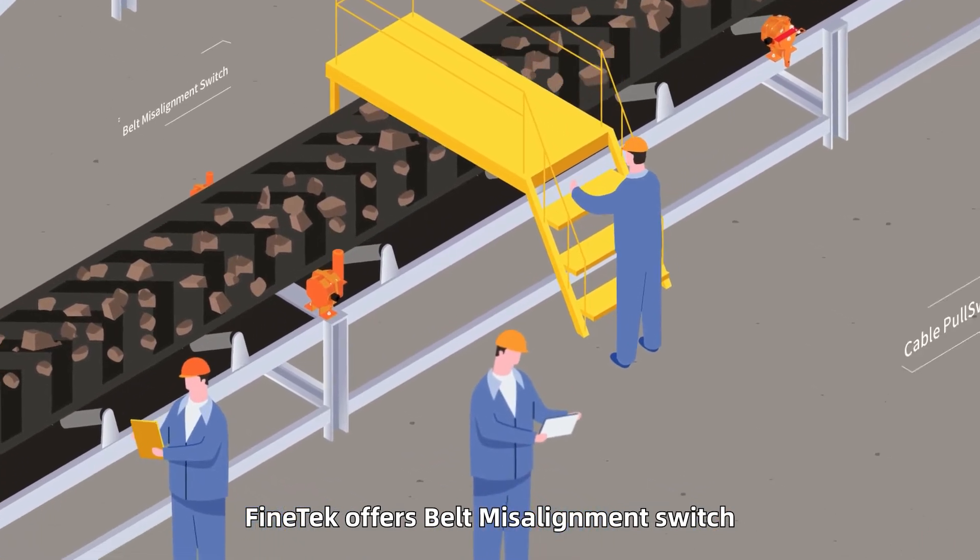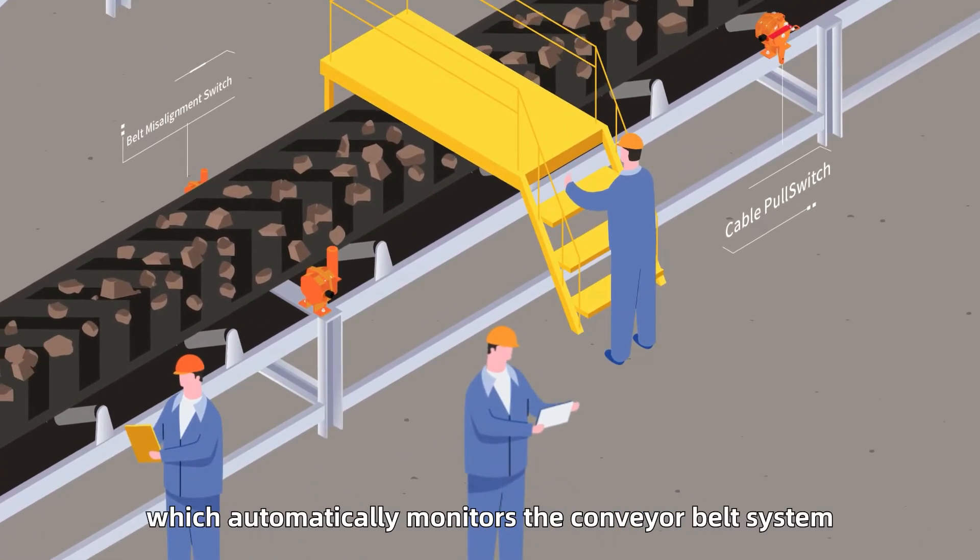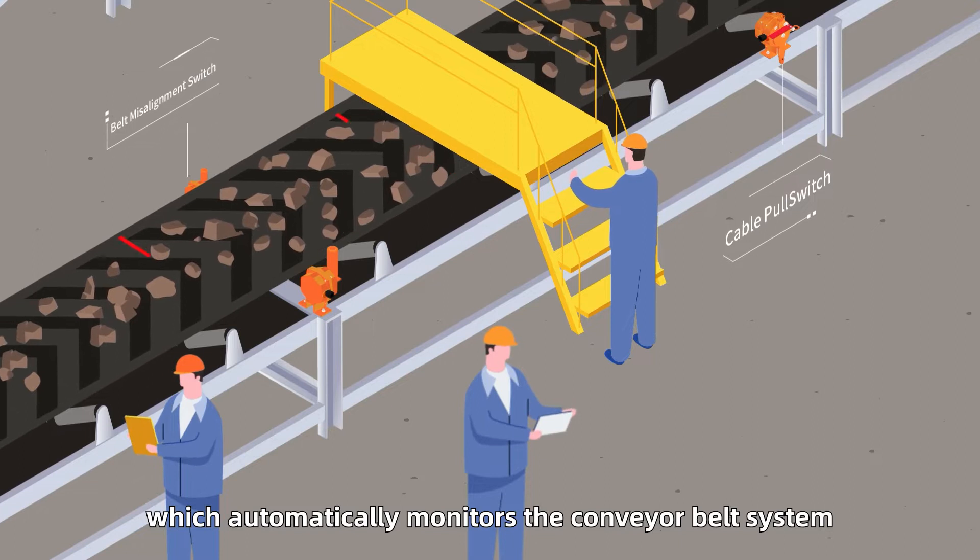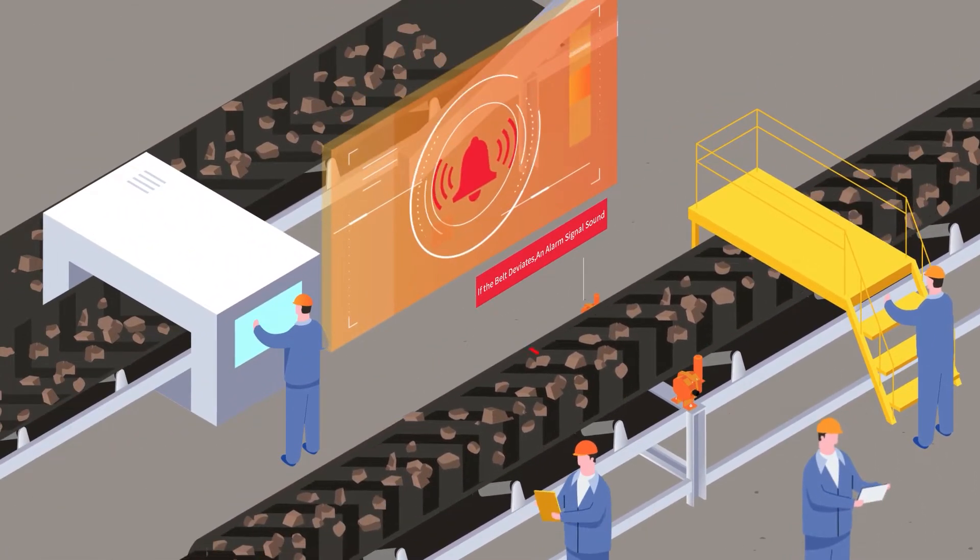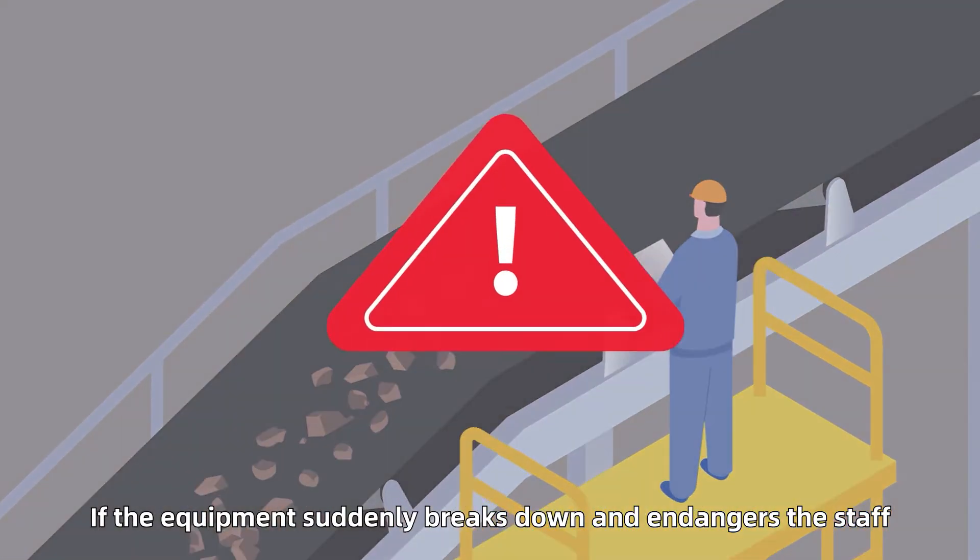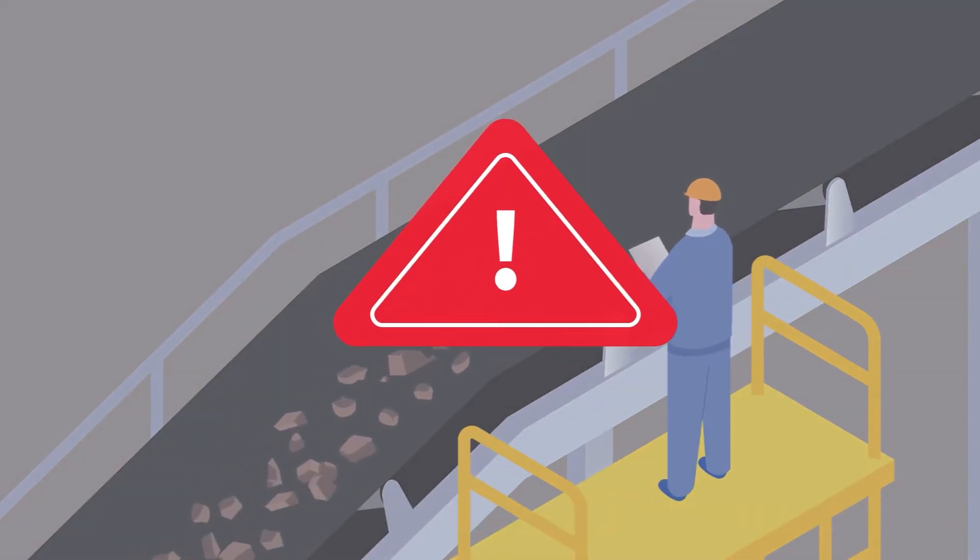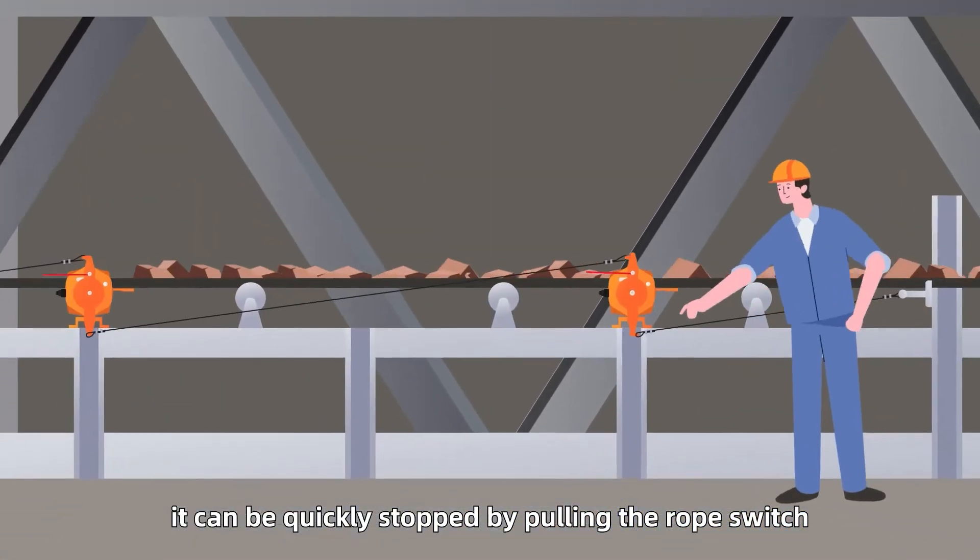FinTech offers belt misalignment switch and cable pull switch, which automatically monitors the conveyor belt system. If the belt deviates, an alarm signal will sound. If the equipment suddenly breaks down and endangers the staff, it can be quickly stopped by pulling the rope switch.